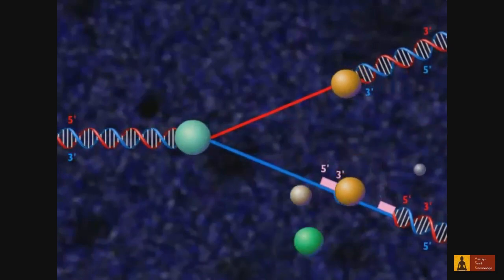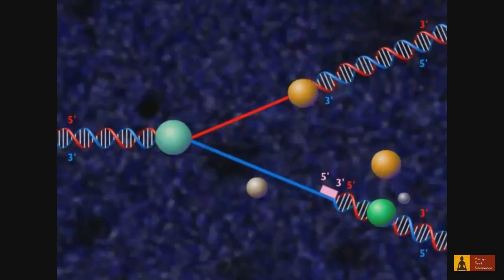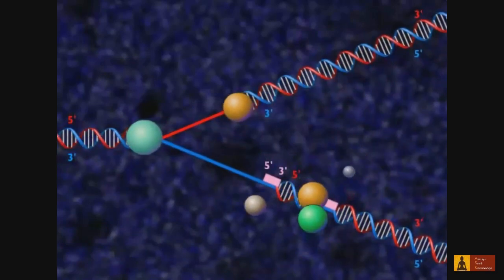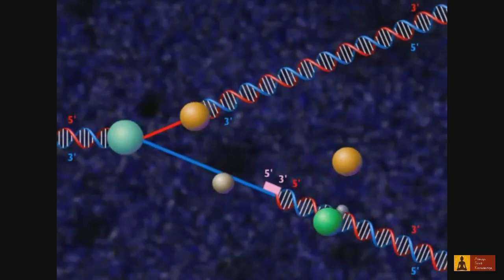During DNA replication, the leading strand is synthesized continuously, while the lagging strand is synthesized discontinuously.